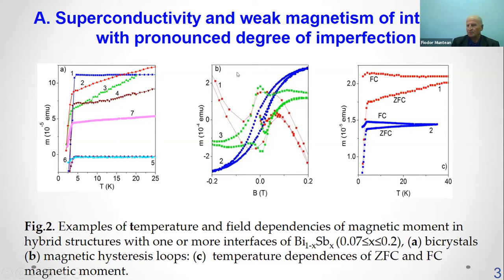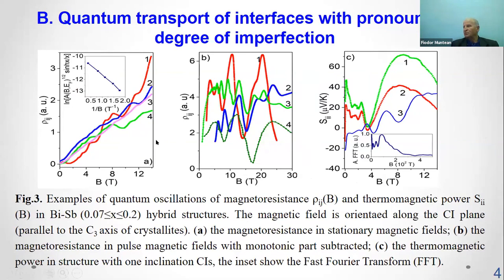Three distinct types of magnetic hysteresis loops are clearly highlighted: loops typical of type-2 superconductors; large crystalline disorientation angle bicrystal and more complex structures with a pronounced degree of imperfection exhibiting superconductivity and ferromagnetism hysteresis loops simultaneously; and a number of bicrystals with high content of imperfections and two superconducting transitions exhibiting dual superimposed ferromagnetic and superconducting loops, indicating simultaneous coexistence of superconductivity and weak ferromagnetism at the interfaces.